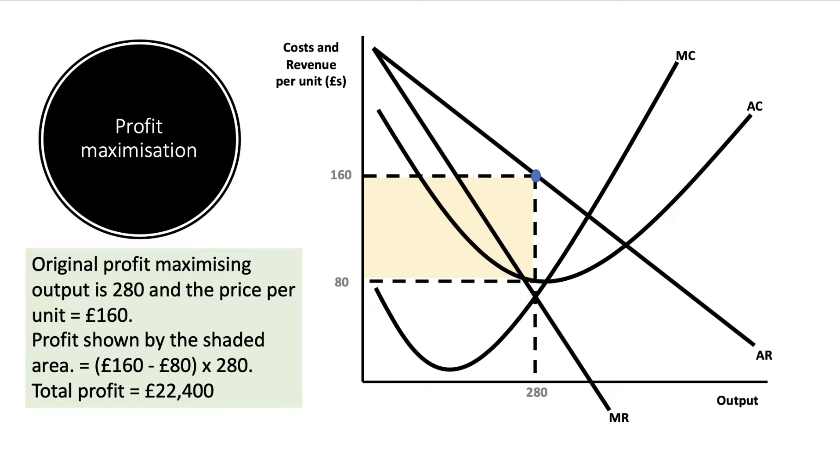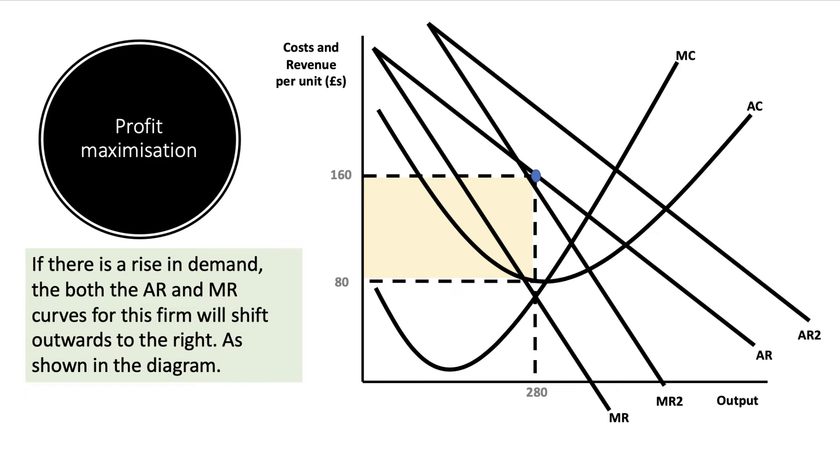Now what happens if there's an outward shift in demand, an increase in demand? Well, the key point is that both the average and the marginal revenue curve will shift outwards to the right - an increase in demand - and that's shown in my diagram.